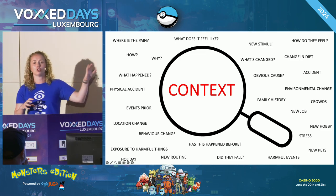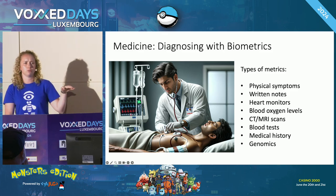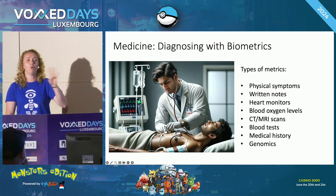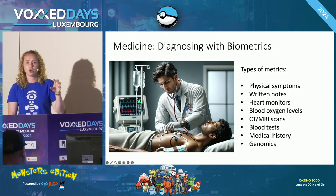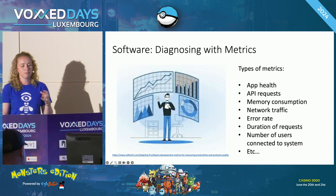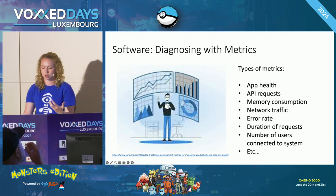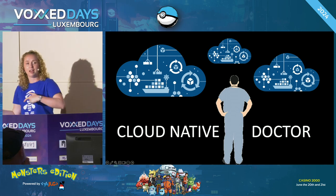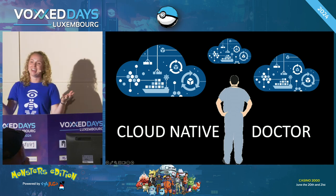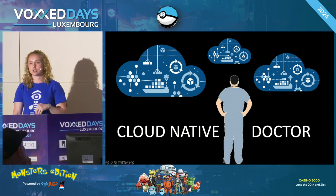If we just took those biometrics — physical symptoms, written notes, heart monitors, blood oxygen levels — you could see a list of symptoms and it could be possible to have four different syndromes that all have those possible symptoms. Whereas by adding in that context, whether it be family history or events that have happened, we can narrow that down to a more specific condition or syndrome. It's the same when it comes to software: we can't just rely on the numbers themselves. We have to understand in what context those numbers occur and why they mean what they do. That's why I want us to take a step toward becoming cloud native doctors, adding context into those all-important observability metrics by utilizing distributed tracing.